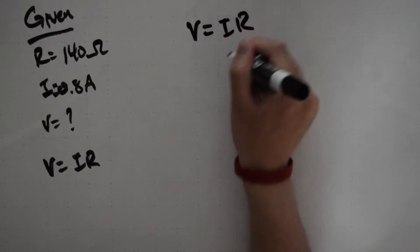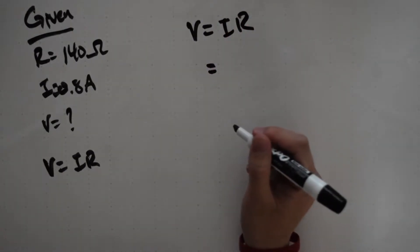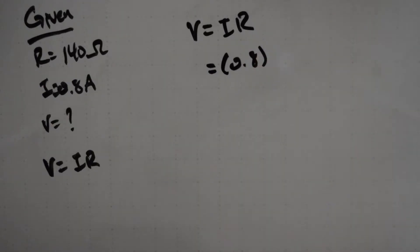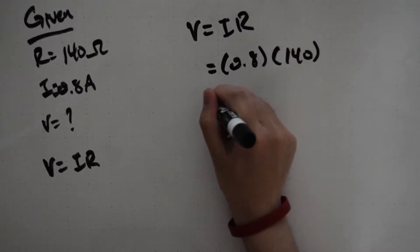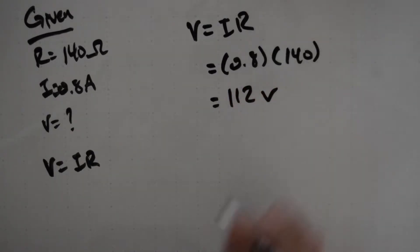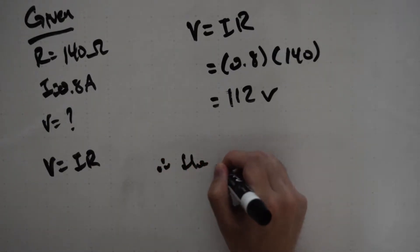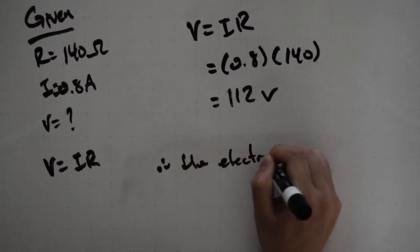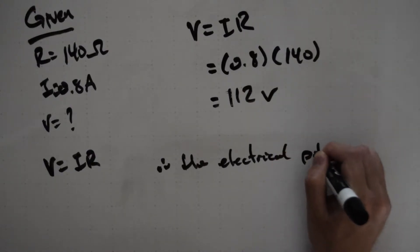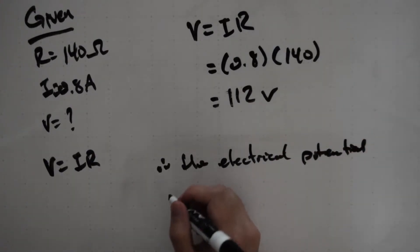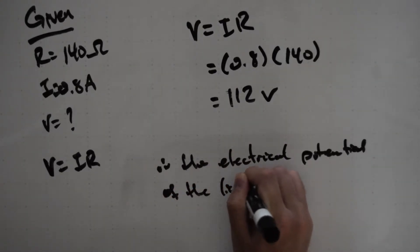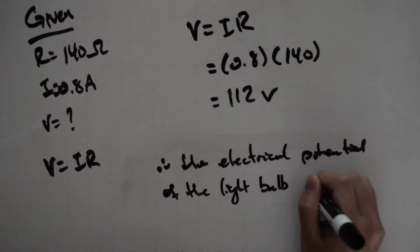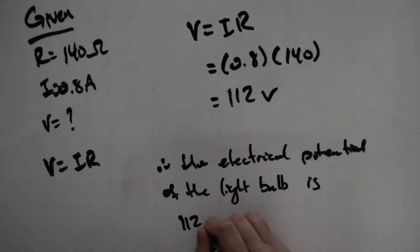Let's rewrite our equation and start plugging in our givens. 0.8 for the current, 140 for the resistance, it's going to give us 112 volts. Therefore, the electrical potential of the light bulb is 112 volts.